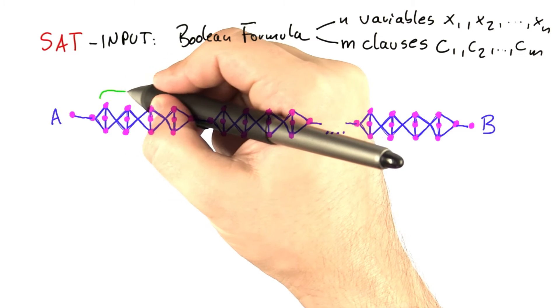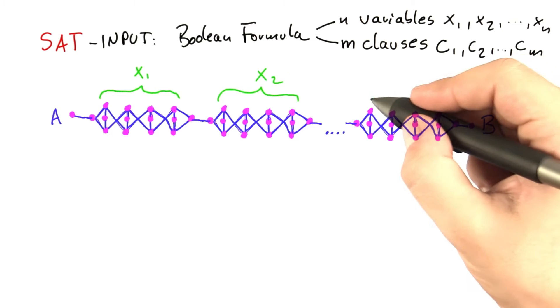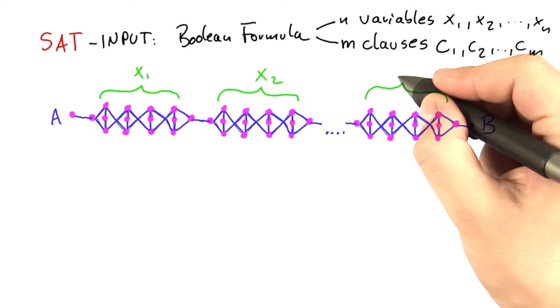So this part here is going to represent x1, this part over here is going to represent x2, and so on, and this one here, xn.